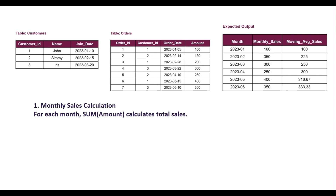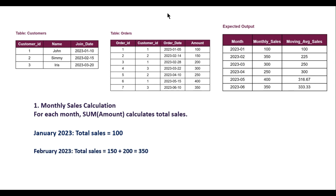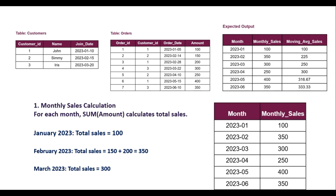For the monthly sales calculation, we use the SUM function on the amount column. If you look at the order_date column: there is one row for January, two rows for February, one for March, one for April, one for May, and one for June. So we calculate the total sales amount for each month. For January the total is 100. For February it is 150 plus 200, which is 350. For March it is 300, and similarly for April, May, and June.